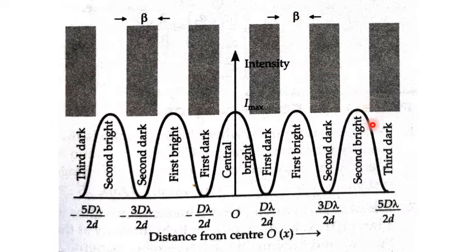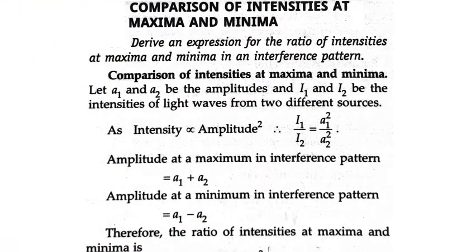This distribution is known as the intensity distribution curve. If you have any confusion, please don't hesitate to ask — I can re-explain it. Moving on, the next topic we'll discuss is the comparison of intensity at maxima and minima: deriving an expression for the ratio of intensity at maxima to minima.